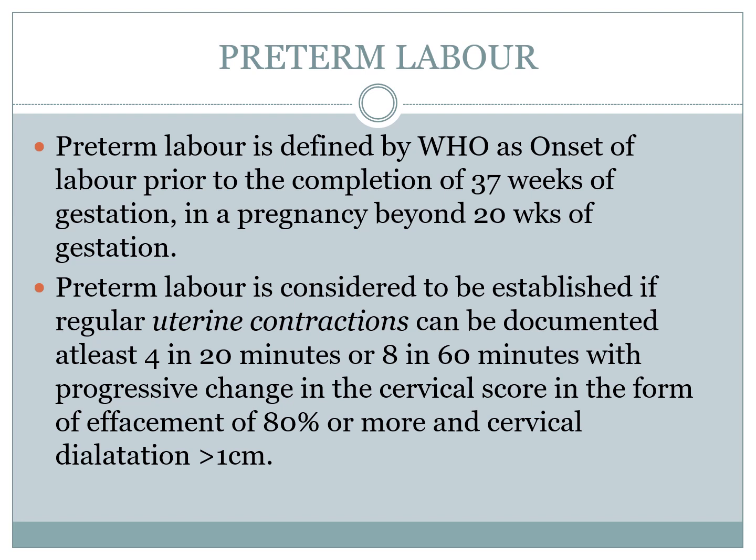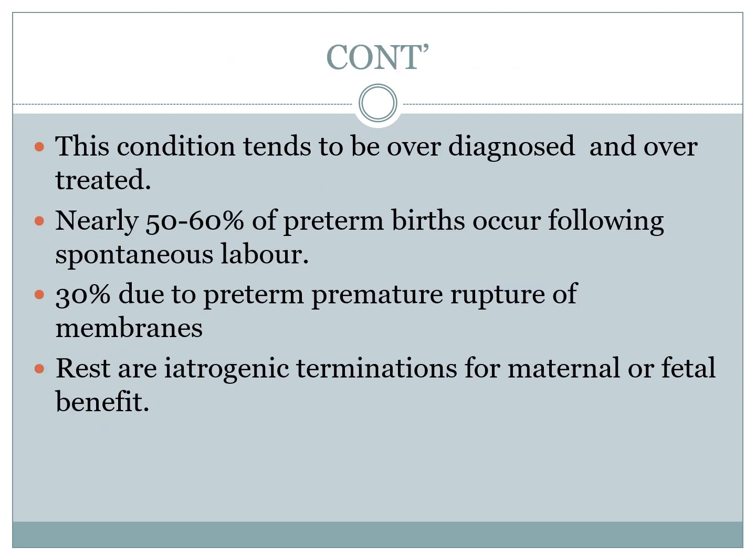Preterm labor is considered to be established if regular uterine contractions can be documented at least 4 in 20 minutes or 8 in 60 minutes, with progressive change in the cervical score in the form of effacement of 80% or more and cervical dilatation of greater than 1 cm. This condition tends to be overdiagnosed and overtreated. Nearly 50 to 60% of preterm births occur following spontaneous labor, and 30% would be due to preterm premature rupture of membranes. The rest would be iatrogenic terminations for maternal or fetal conditions.